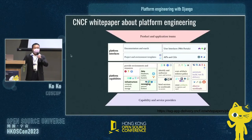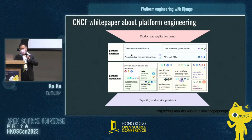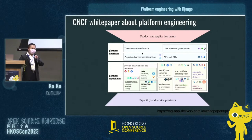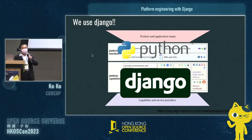CNCF, the Cloud Native Foundation, has a white paper about platform engineering with many detailed components. For example, there are components for user interface, API, and CLI. But in our case, what we use is just Django — we use Django to replace almost all of them because Django is easier to develop.